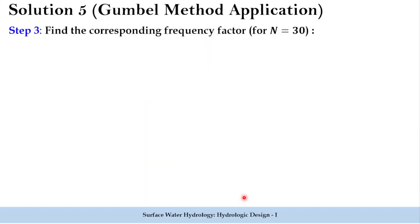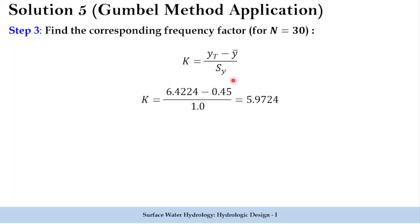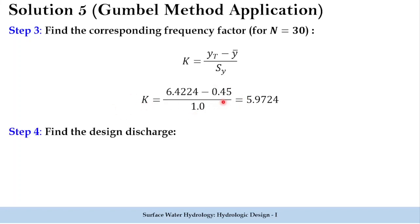In step three, we find the frequency factor k using the equation: k equals (yT minus y-bar) divided by sy, where y-bar and sy are the reduced variate mean and standard deviation, already given as 0.45 and 1 respectively. The k value is obtained as 5.9724.